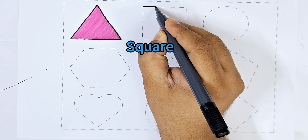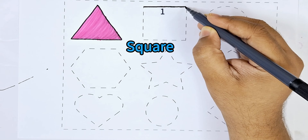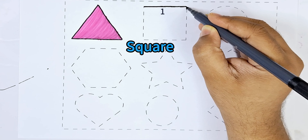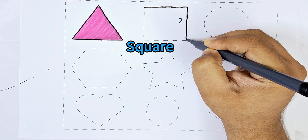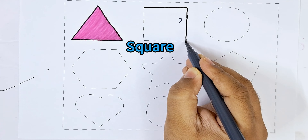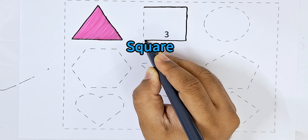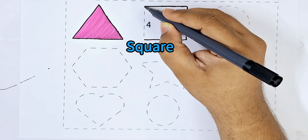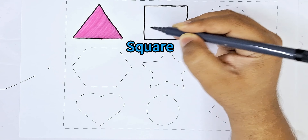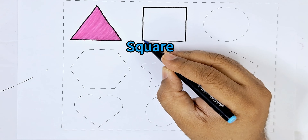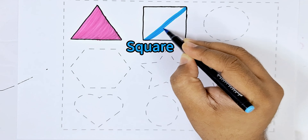This one is a square. It has four sides: one, two, three, four. Square has four sides. And this is sky blue color.